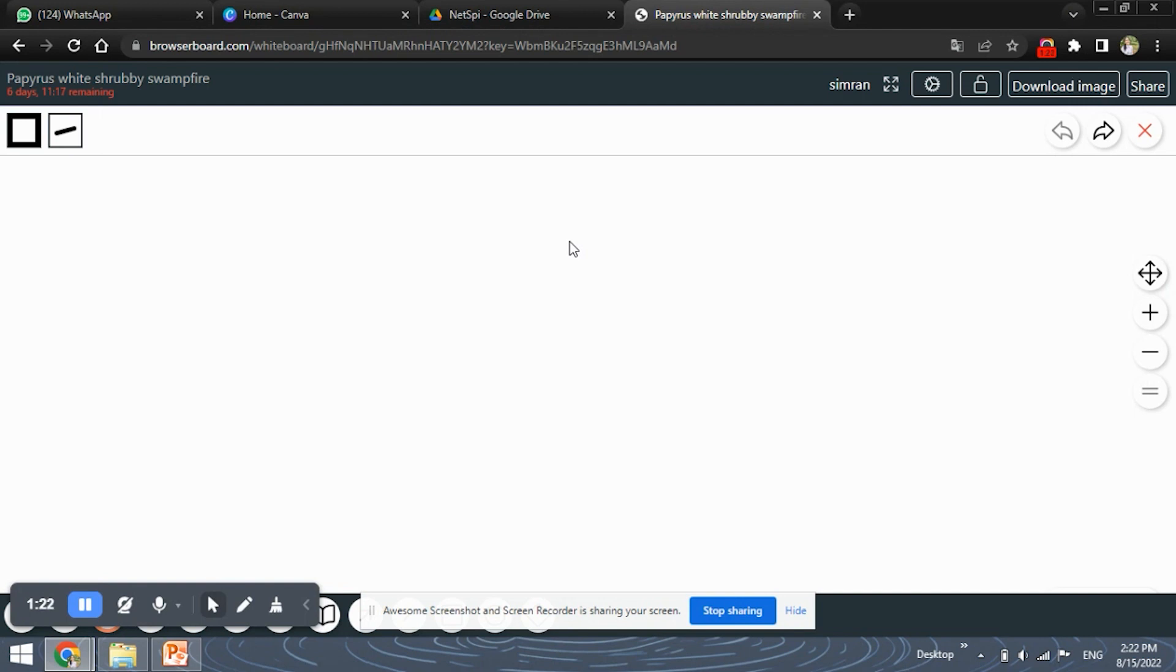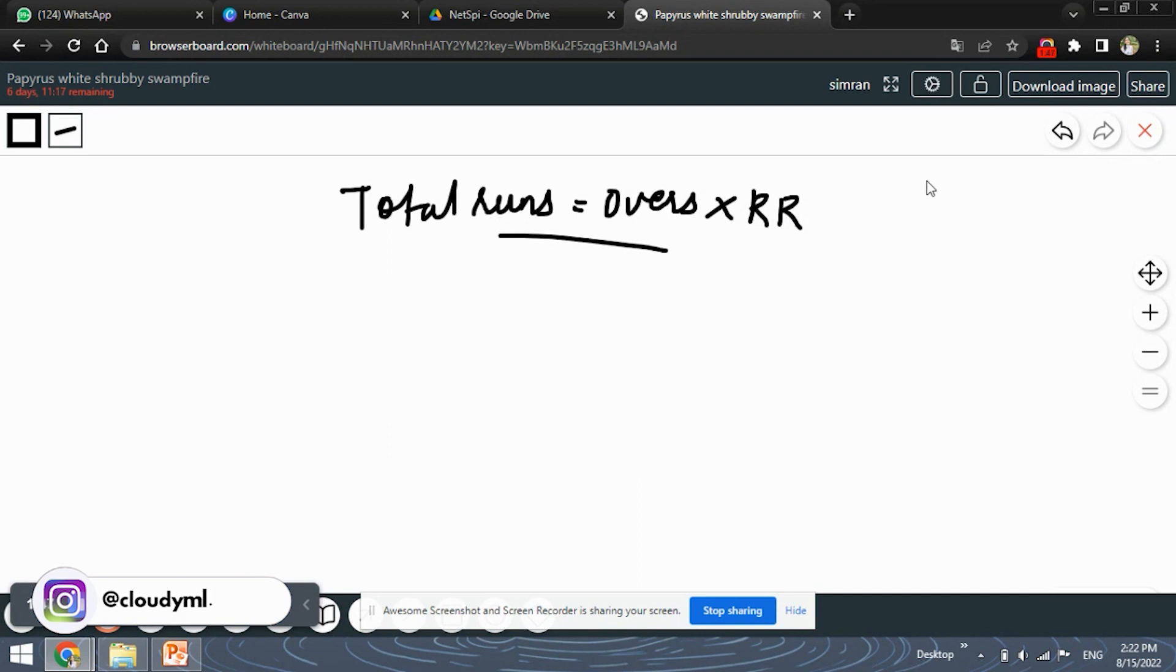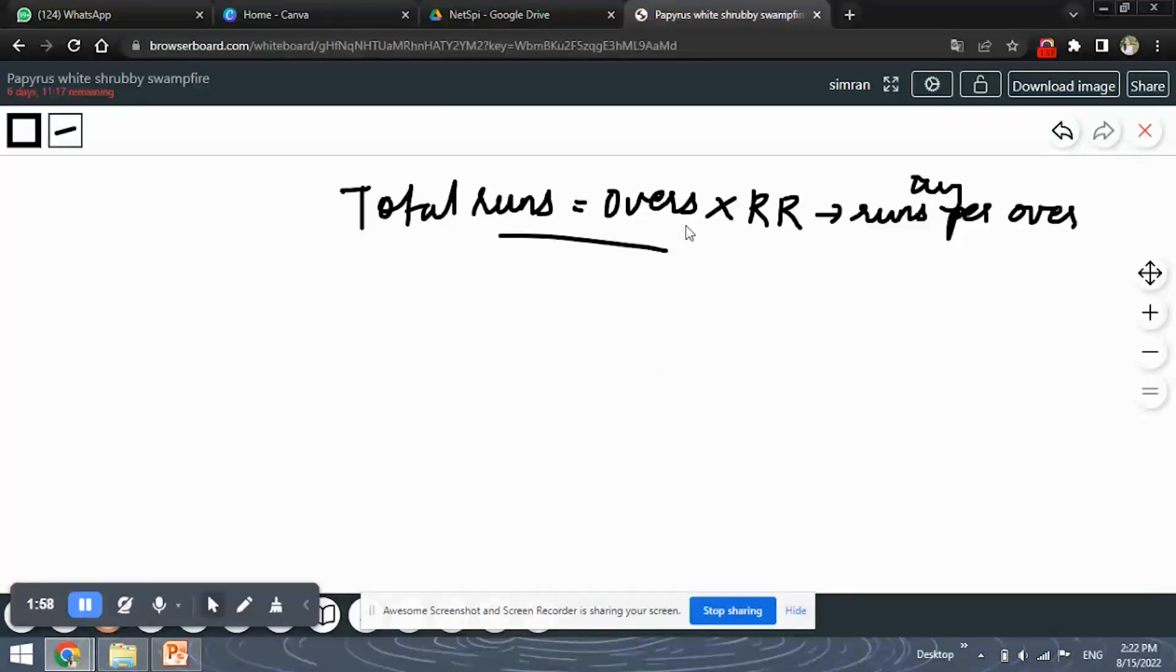If you know that the total runs, the total runs that will be scored, generally the total runs scored are overs into the run rate. It's denoted by RR, this is the run rate. So this is a general concept, that total runs will be the overs into run rate. Run rate means runs per over, average runs per over, that is called as run rate.